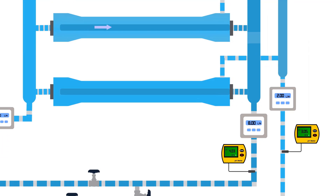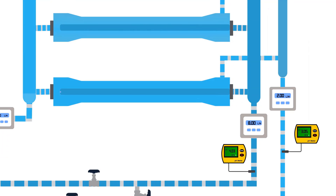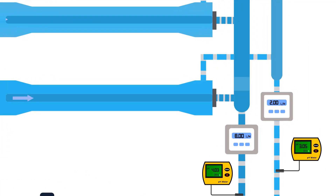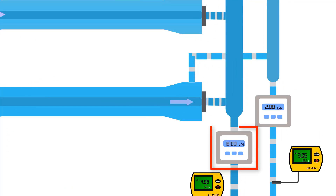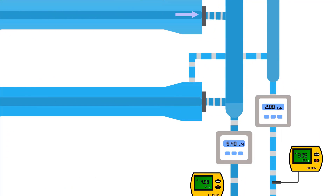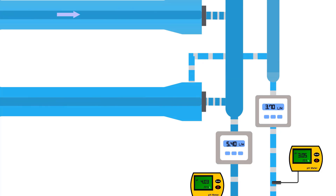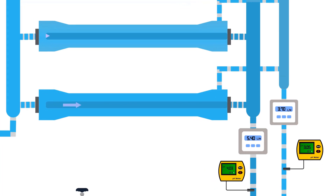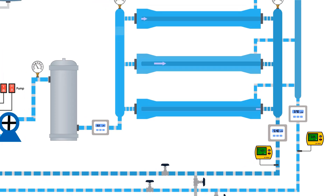Another indication is if the flow rate of the permeate decreases and the flow rate of the reject increases relative to normal. This means the membrane should be cleaned immediately.